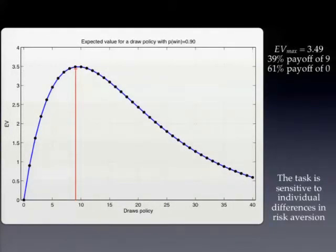Expected value is straightforward to compute. This is the expected value of different policies, how many times you drew. If you draw only 3, much lower expectation. This curve is maximized by taking 9. If a person has different risk attitudes, this shifts in predictable ways. As probability of gain increases, the mass shifts to the right.